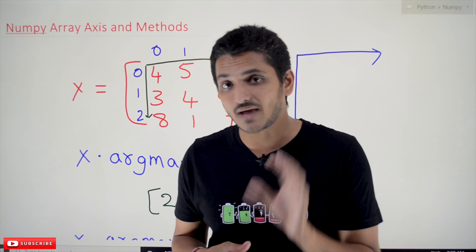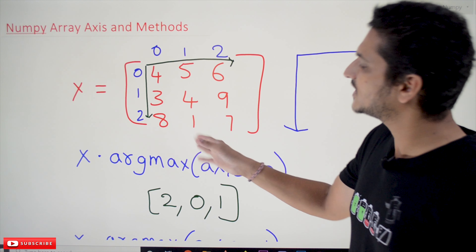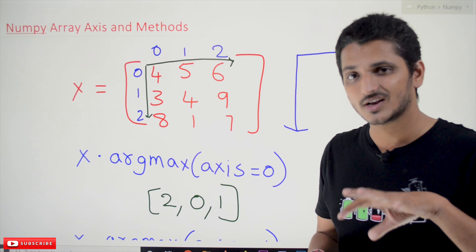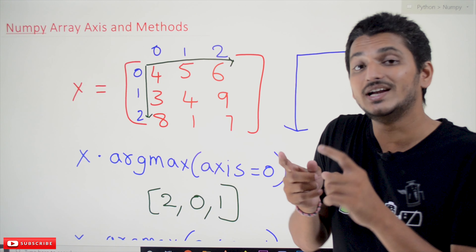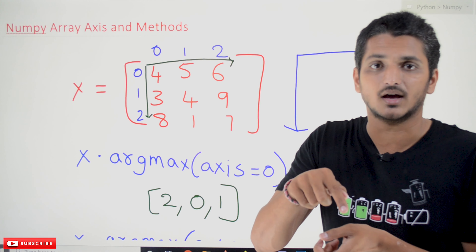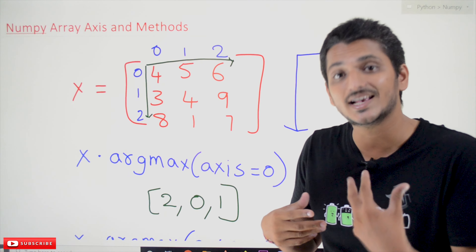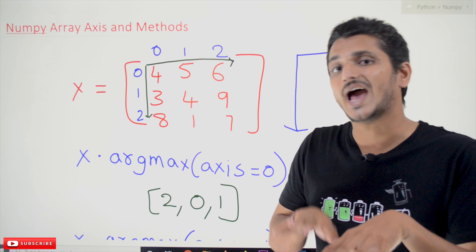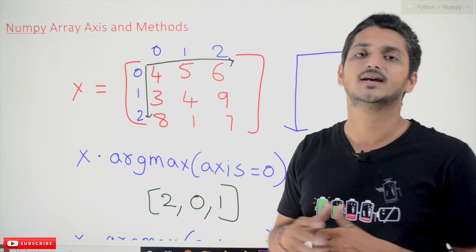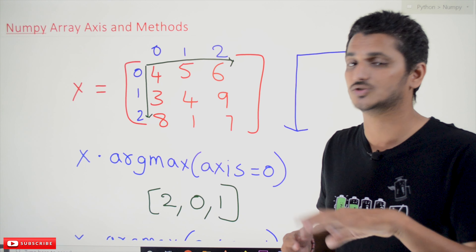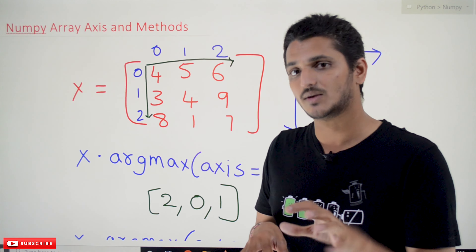Most people get confused about how methods work on the axis — we will get clarity here. We are taking a two-dimensional array, hoping you already know what a two-dimensional array is and what the indexes are; all basics were discussed previously. x is a two-dimensional array with elements 4, 5, 6, 3, 4, 9, 8, 1, 7. We define it using the array function, which returns an n-dimensional array class object saved in variable x. We can use all attributes and methods present on this n-dimensional array class.